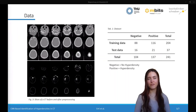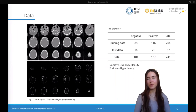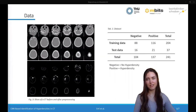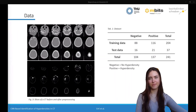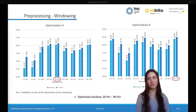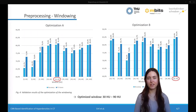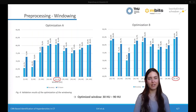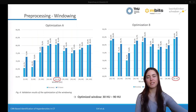On the left you can see a few slices of a CT scan before and after pre-processing. The pre-processing essentially consisted of skull stripping and windowing, and the latter turned out to be a decisive step for model performance, so we further optimized it. To optimize the window, we evaluated different thresholds in two iterations. The figures show the accuracy and F1 score based on the validation dataset. The thresholds were chosen based on the Hounsfield units of the brain tissue and the hyperdensities, and the best results were obtained by using a window of 30 to 90 Hounsfield units.